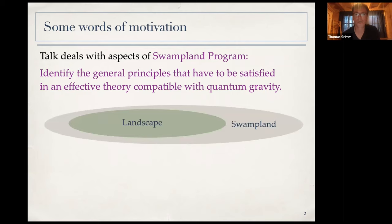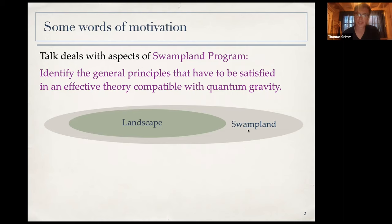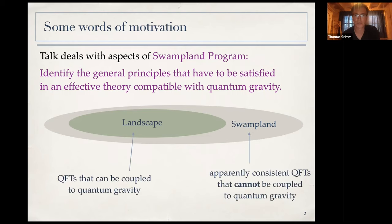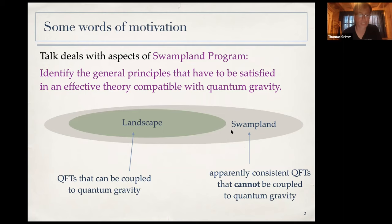What is the question in the Swampland program? One wants to identify general principles that have to be satisfied in an effective theory to be compatible with a theory of quantum gravity. Imagine you have a set of apparently consistent quantum field theories — you would expect that only a subset, termed the landscape, is actually consistent with quantum gravity. There is another set, known as the Swampland, which cannot be consistently coupled to quantum gravity.